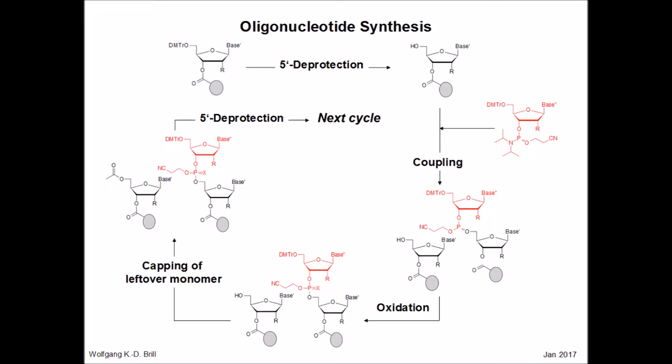Before we talk about the recycling of reagents and nucleosides during oligonucleotide synthesis, an overall overview of the process itself. It starts, as shown on this slide, with a 5'-dimethoxytritylated and base-protected nucleoside bound via its 3' position to a polymeric support, indicated as a gray circle.